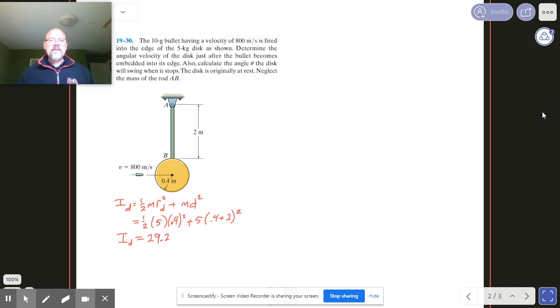Okay, so this kind of situation is sometimes called a ballistic pendulum. The idea here is that we've got some kind of object, we're going to shoot it with a bullet, some kind of projectile, and then we're going to see how far up this thing swings.